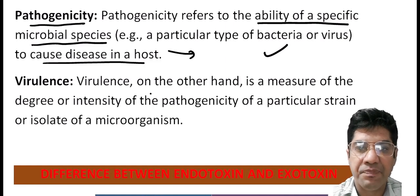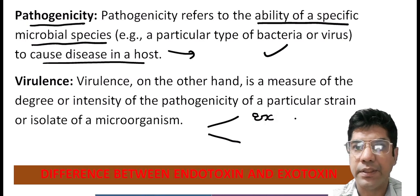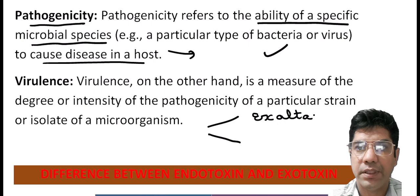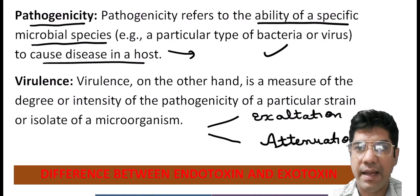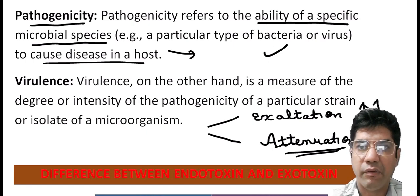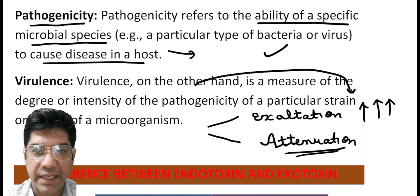Virulence is influenced by genetic factors like the presence of certain virulence genes. Two terms you should know are exaltation and attenuation. Exaltation is the enhancement of virulence — it is a process by which the virulence of a microbial strain increases.